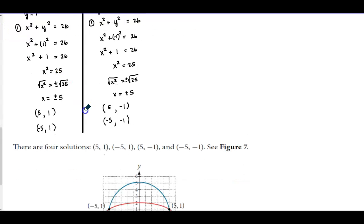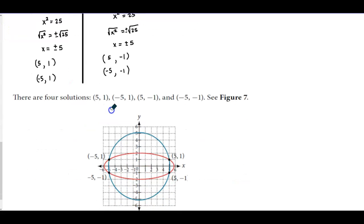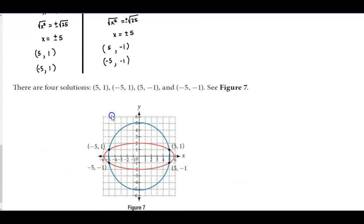So we have four solutions in total, meaning our circle in blue has been intersected by the ellipse at four ordered pairs.